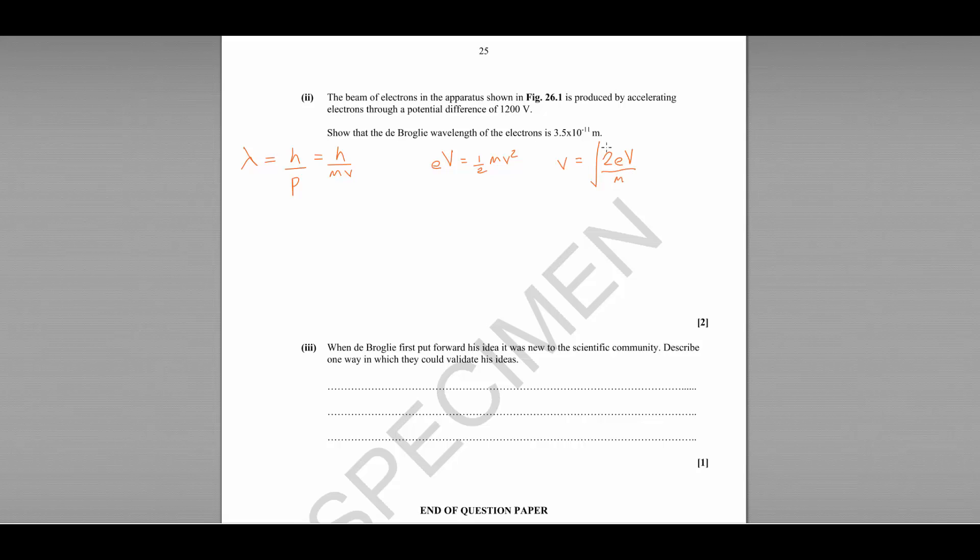Most of these numbers are coming from your formula sheet. So you're going to have the square root of two times 1.6 times 10 to the minus 19 times 1200 divided by 9.11, the mass of an electron, 9.11 times 10 to the minus 31. And that will give us a velocity of 2.05 times 10 to the power of 7 meters per second. That's about just under 10 percent of the speed of light.